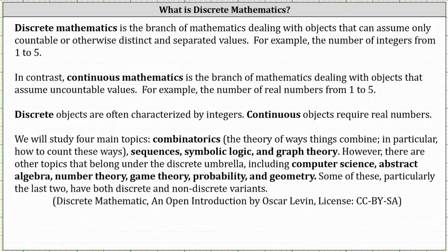What is discrete mathematics? Discrete mathematics is the branch of mathematics dealing with objects that can assume only countable or otherwise distinct and separated values. For example, the number of integers from one to five.